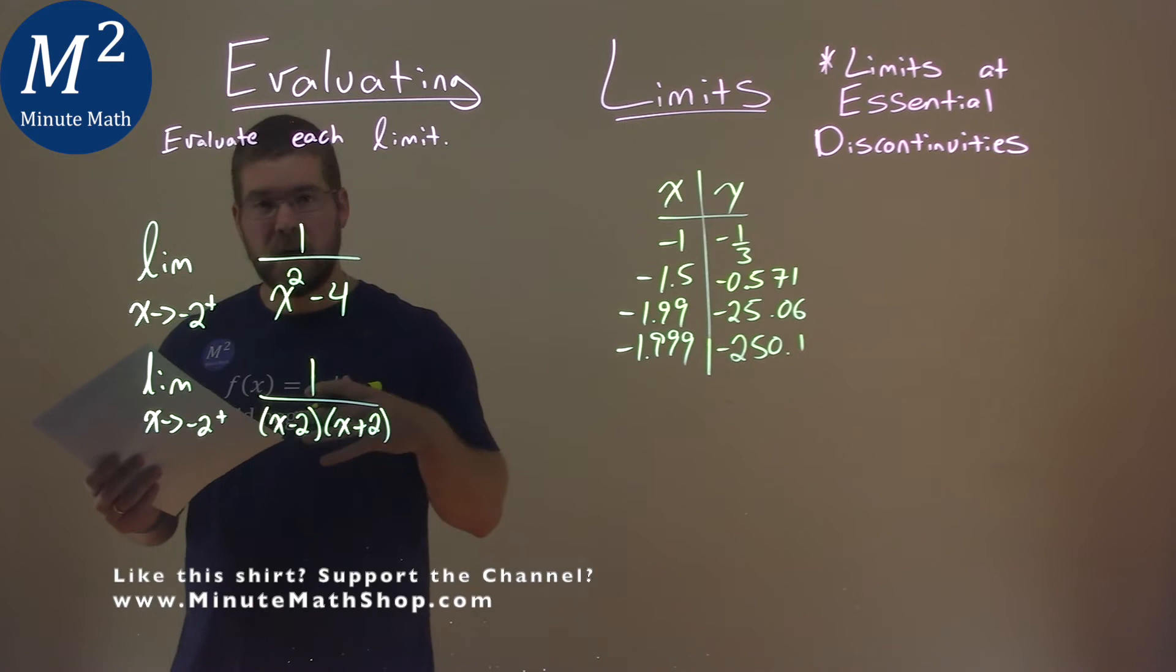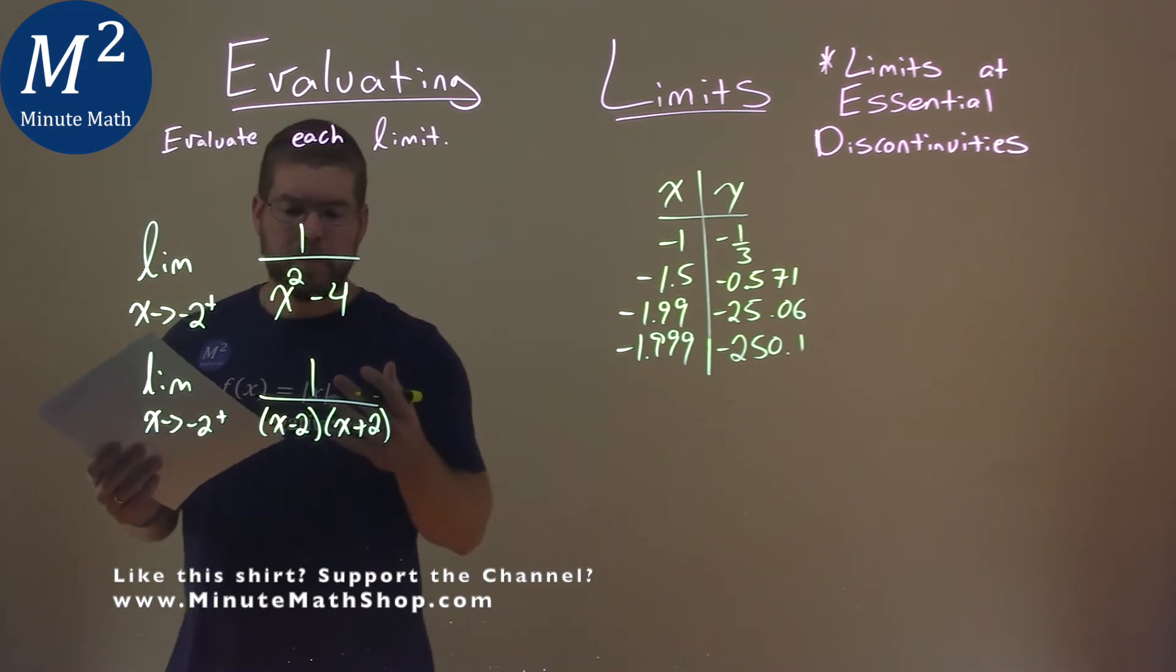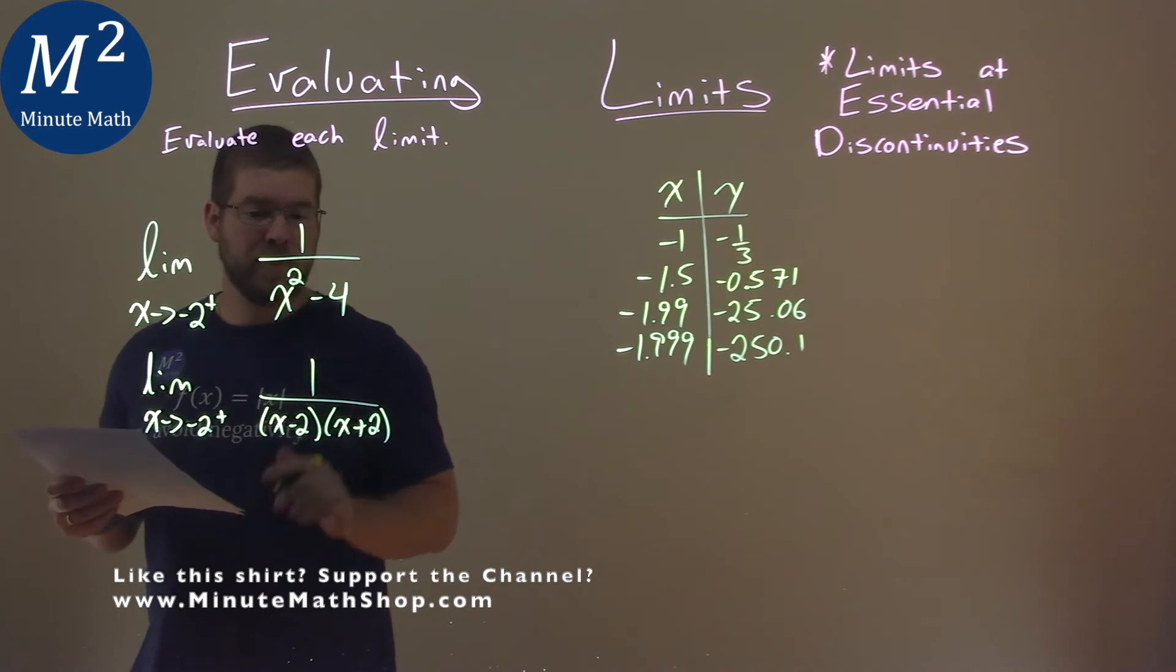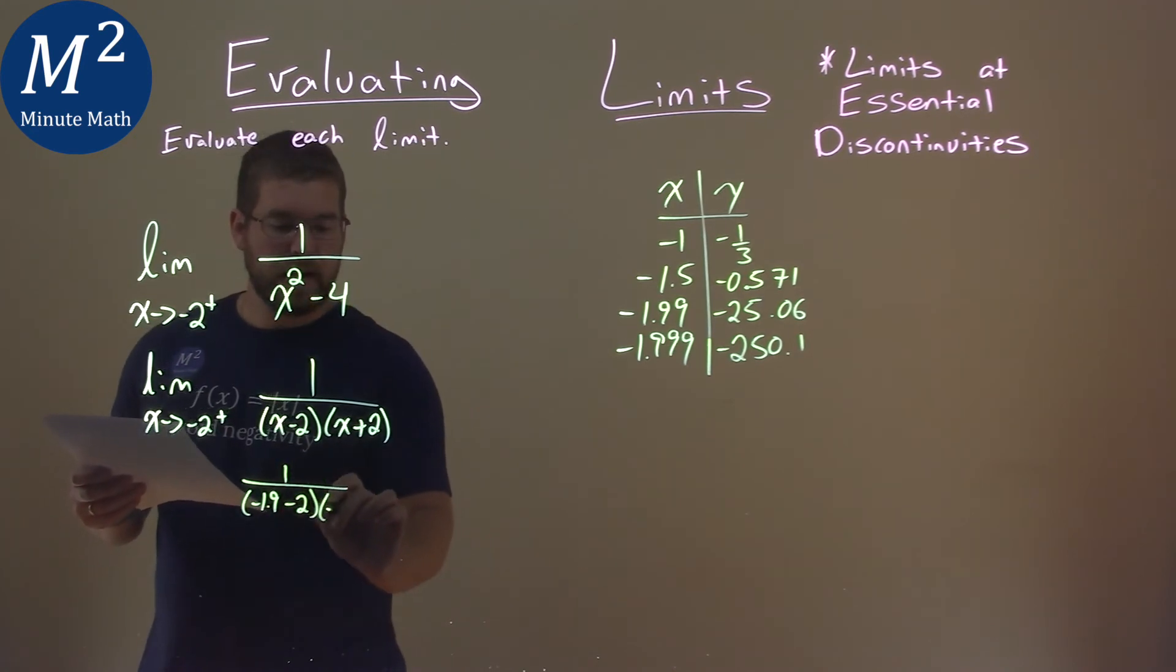So, we need to figure out if it's positive or negative leading up to that infinity. What I like to do is take a value just to the right of negative 2 and plug it in. We have 1 over, well, let's go negative 1.9 is just to the right of negative 2, minus 2, and negative 1.9 plus 2.